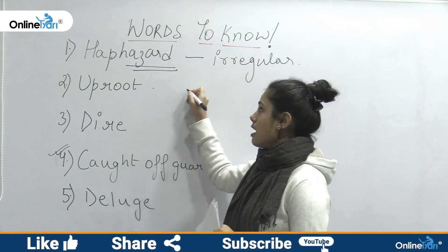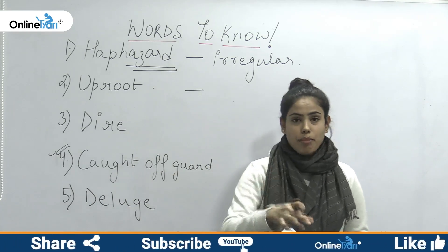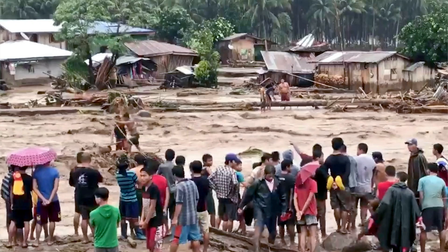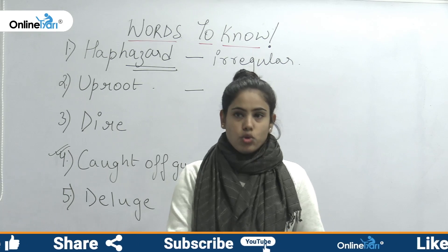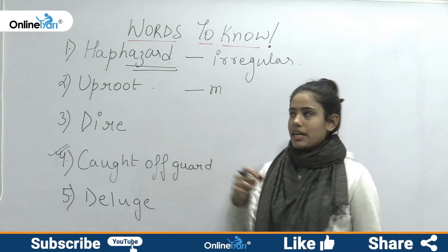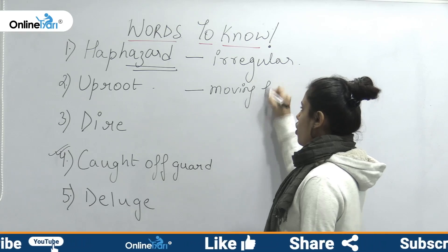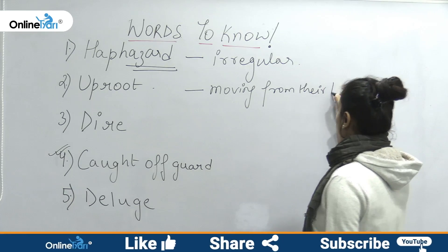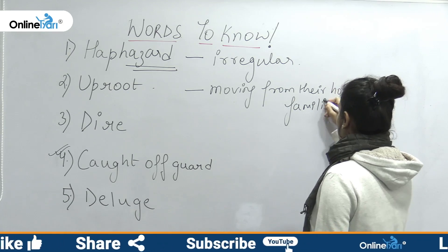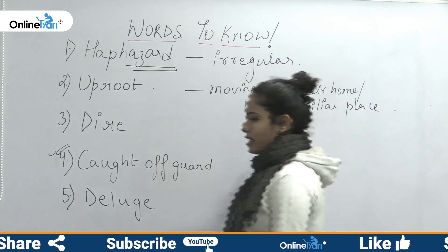Then we have number 2, that is uproot. What is uproot? Look at the image again. I have told you that people are trying to go to a safe place. So what are they doing? They are actually moving from their home, from a familiar place. They are getting away from their home.